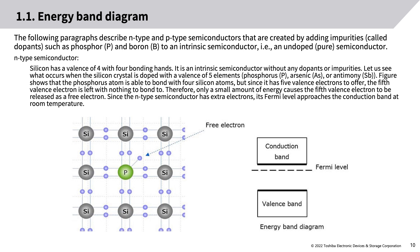N-type and P-type semiconductors are created by adding impurities called dopants, such as phosphorus and boron, to an intrinsic (undoped, pure) semiconductor. Silicon has a valence of four with four bonding hands. When silicon crystal is doped with a valence-of-five element such as phosphorus, arsenic, or antimony, the phosphorus atom bonds with four silicon atoms, but its fifth valence electron has nothing to bond to. Only a small amount of energy causes this fifth electron to be released as a free electron. Since the N-type semiconductor has extra electrons, its Fermi level approaches the conduction band at room temperature.